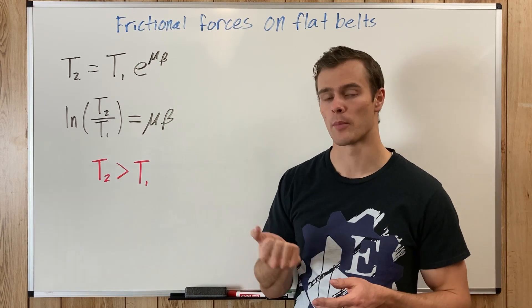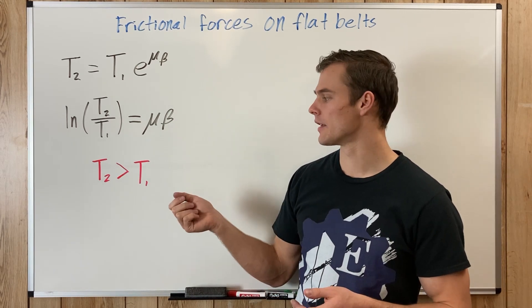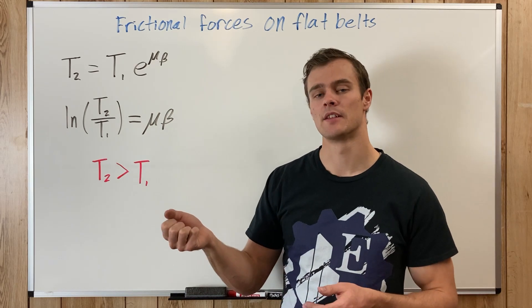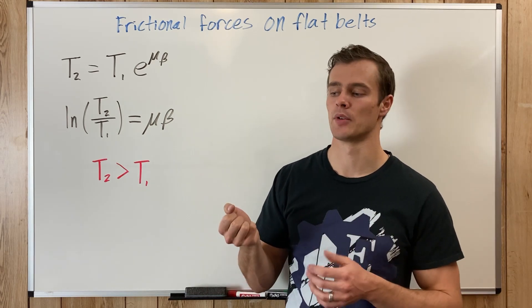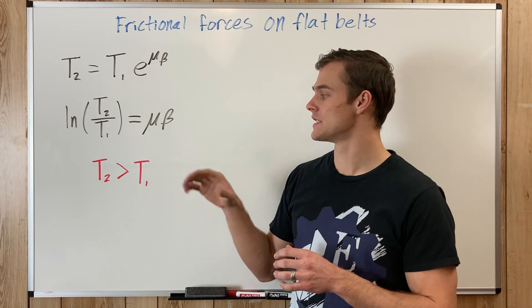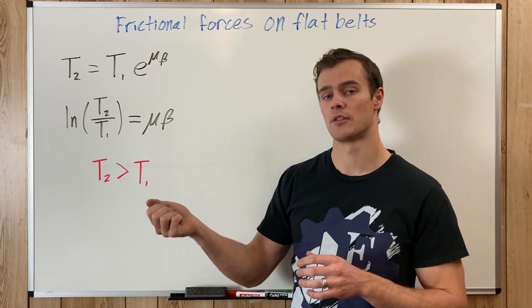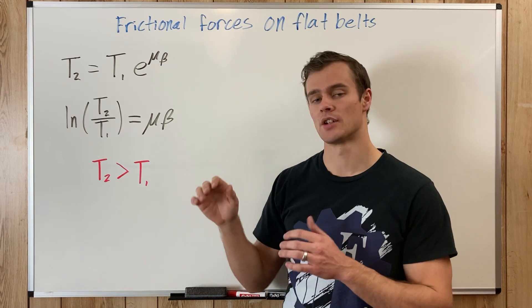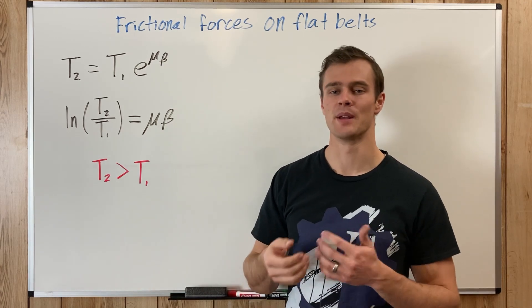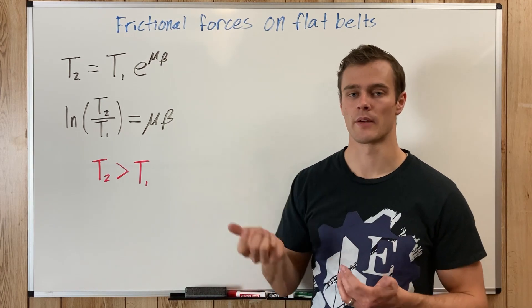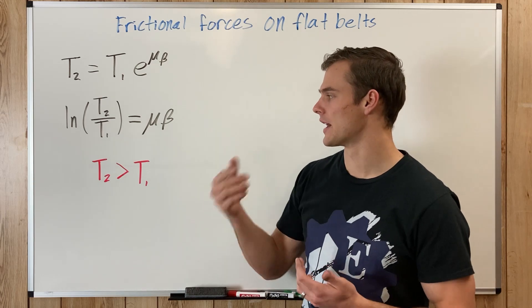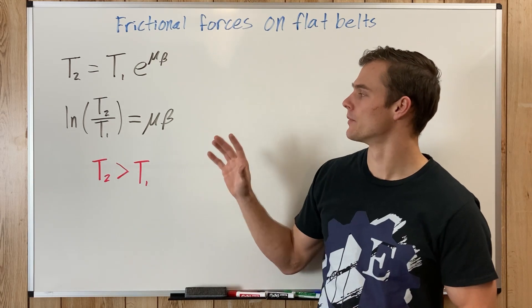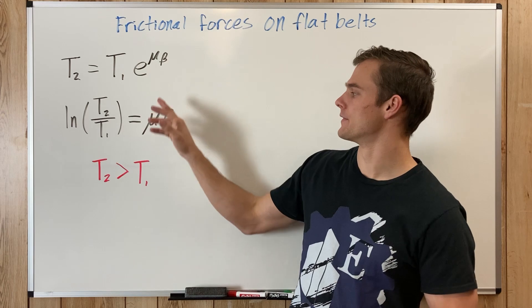For example, if we are pulling a rope over a pulley, then T2 will be the tension in the rope on one side of the pulley, and T1 is going to be the tension on the other side of the pulley being pulled down by gravity or whatever else it may be pulled down by.